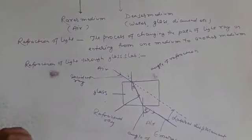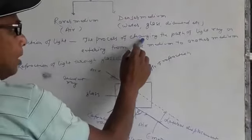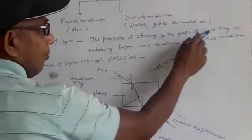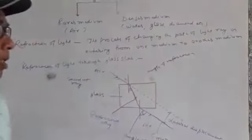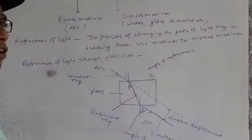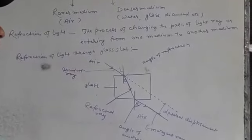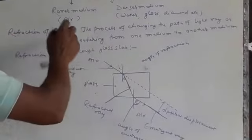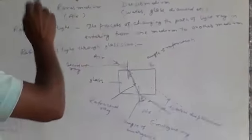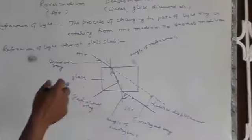So, the definition of refraction of light: the process of changing the path of a light ray on entering from one medium to another medium. This means if a light ray enters from one medium to another medium, it changes its path. That changing of the path of the light ray is known as refraction of light. Now the topic is: how does refraction of light take place through a glass slab?